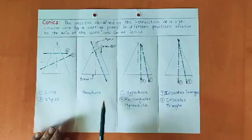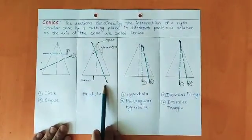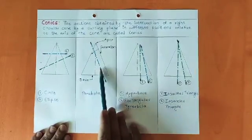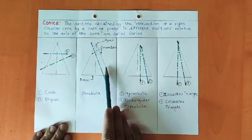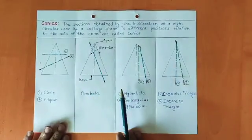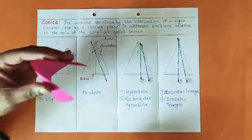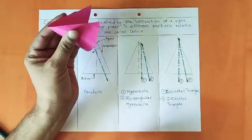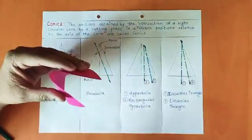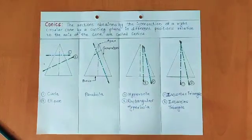In the next case, if you have a cutting plane that is passing through one of the generators and the base, and the cutting plane is parallel to the remaining generator, then the curve you get will be a parabola. As you can see, the cut is parallel to one of the generators, giving a parabola.